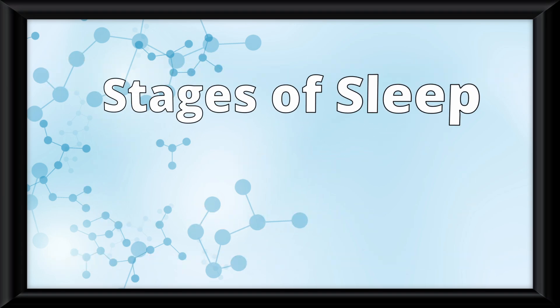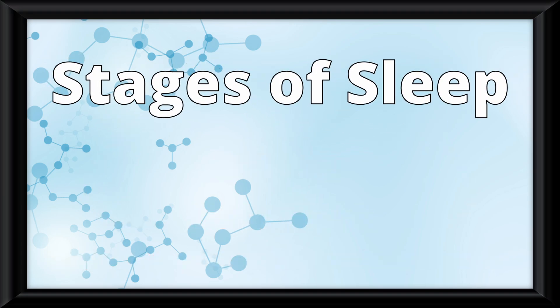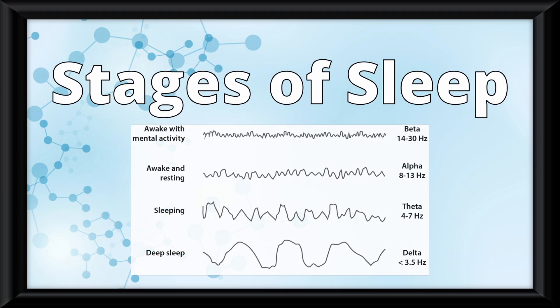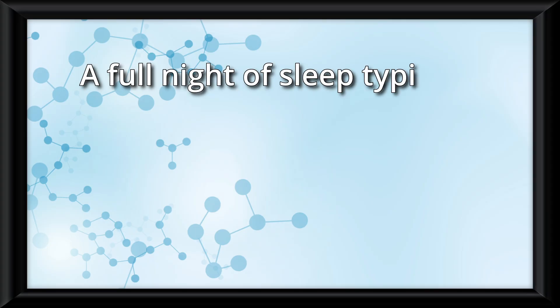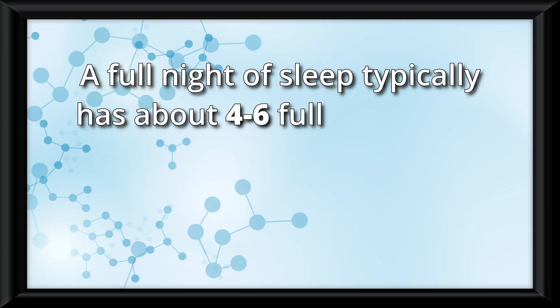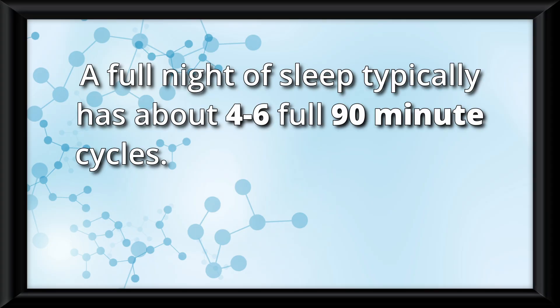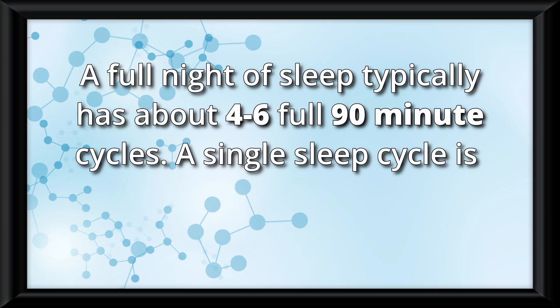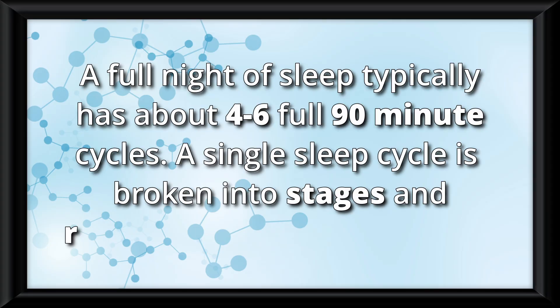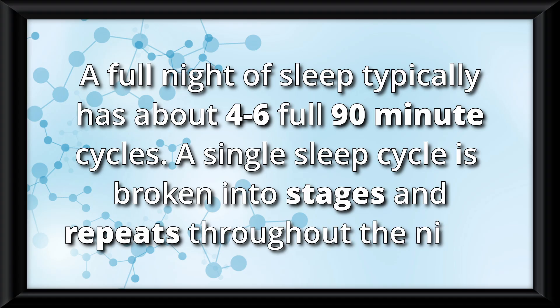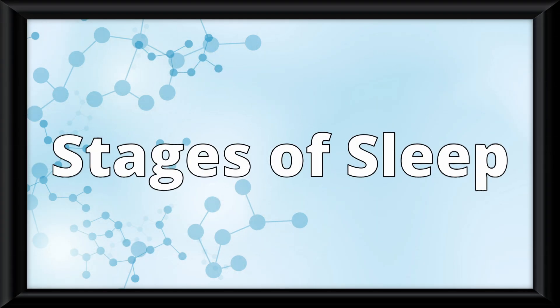Now let's move into the stages of sleep, which are identified by brainwave patterns measured on an EEG. A full night of sleep typically has about 4–6 full 90-minute cycles. A single sleep cycle is broken into stages and repeats throughout the night. Let's go through one 90-minute cycle.